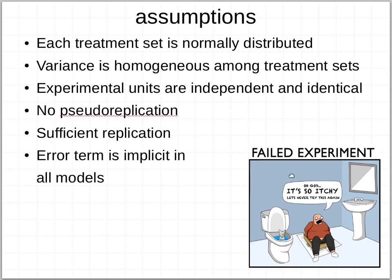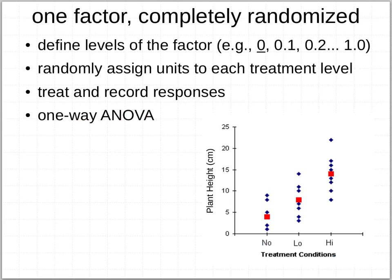Hopefully you can tell that the reason a failed experiment is failed is simply because of insufficient replication. A one-factor completely randomized design is about the simplest model we can come up with. We have some factor with multiple levels — for example, three treatment levels: none, low, and high. Those are the same treatment; it's just whether we have none, a little, or more of it. We randomly assign experimental units to each treatment level, treat them, let things grow, record the responses, and then conduct a one-way analysis of variance.